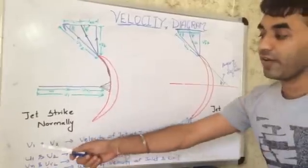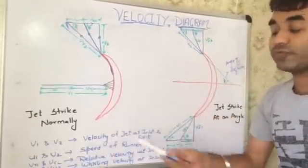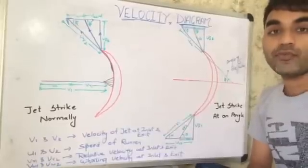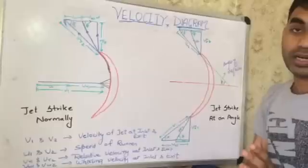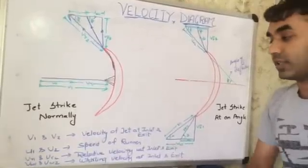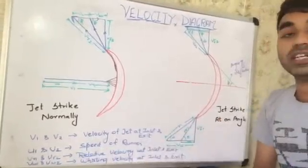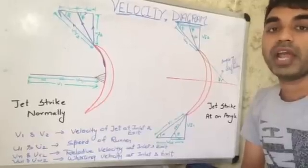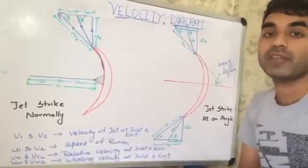The velocity which we have V1 and V2, that is the velocity of jet at inlet and exit. We have U1 and U2, that is the speed of runner when the water is coming and strikes with the runner at the inlet and exit. We have Vr1 and Vr2, these are the relative velocity which is always combined with the help of V1 and U1. It means the velocity of jet and the velocity of runner.